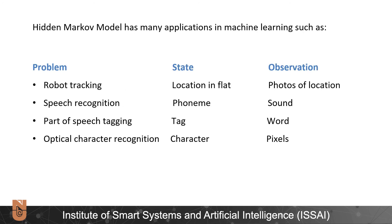Hidden Markov Model has many applications in machine learning such as robot tracking, speech recognition, part of speech tagging, optical character recognition and many more.